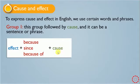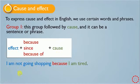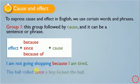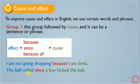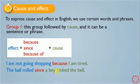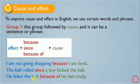After them we have the cause sentence. Look at this example: 'I am not going shopping' — this is the effect — 'because I am tired.' 'I'm tired' is the cause of why you are not going shopping. Second example: 'The ball rolled' — this is the effect — 'since a boy kicked the ball.' That is the cause of why the ball rolled. 'He failed the test' — because of his bad study — his bad study is the cause.